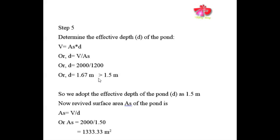Since 1.67 m exceeds the maximum allowable effective depth of 1.5 m, we adopt d = 1.5 m. With this revised depth, we recalculate the surface area: revised surface area = V / d = 2000 / 1.5 = 1333.33 square meters.